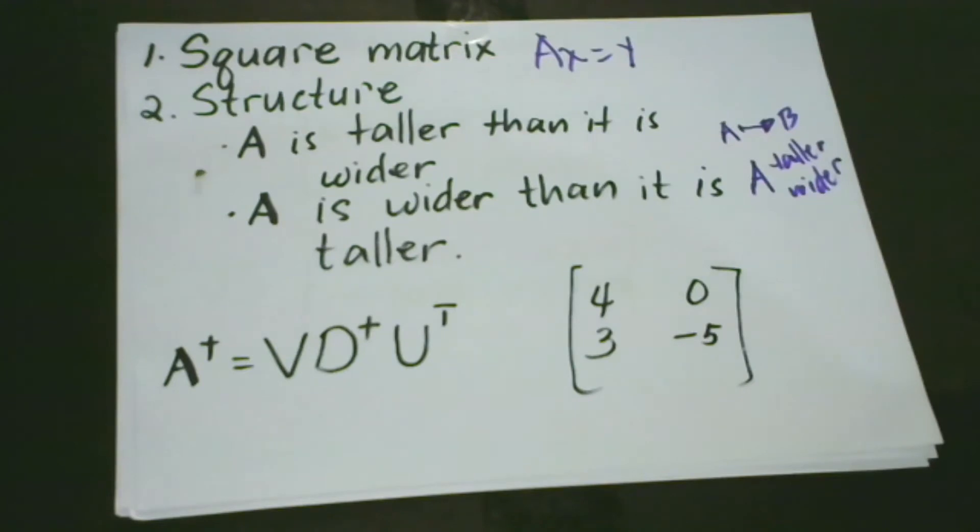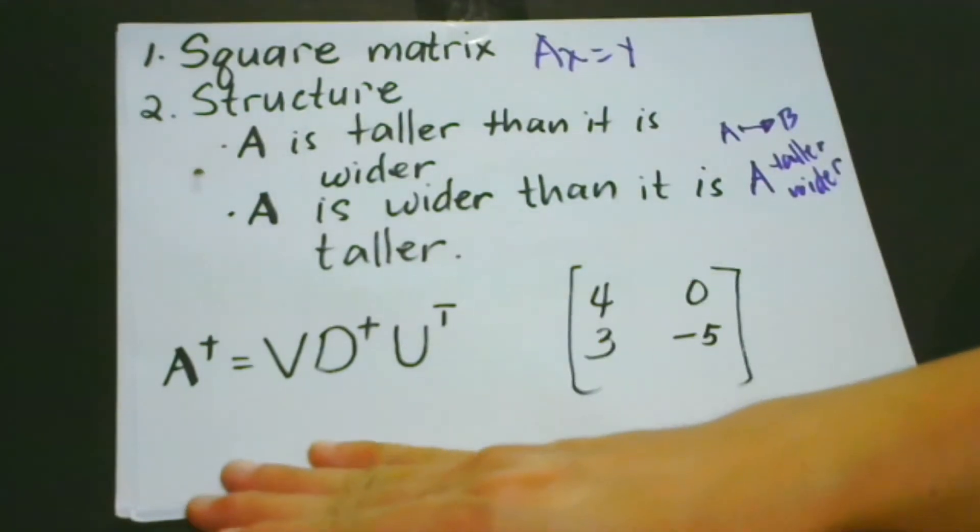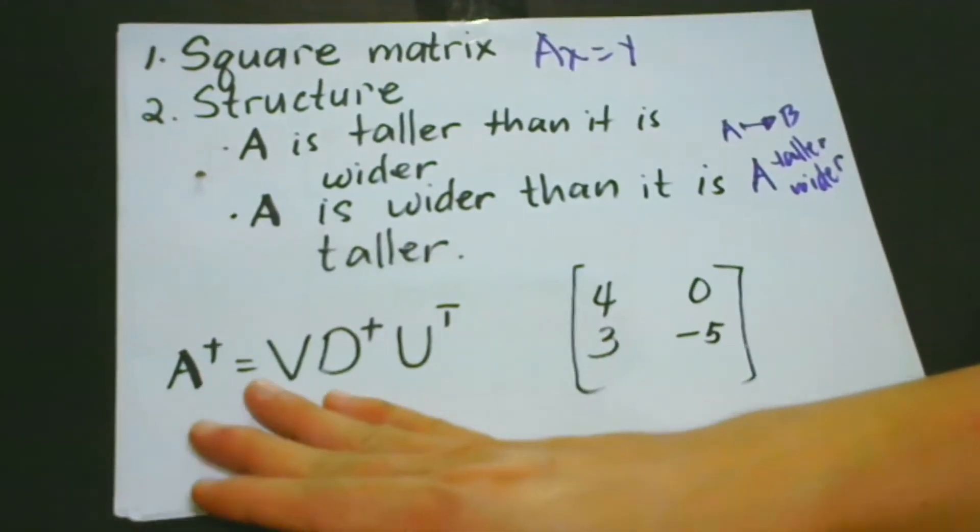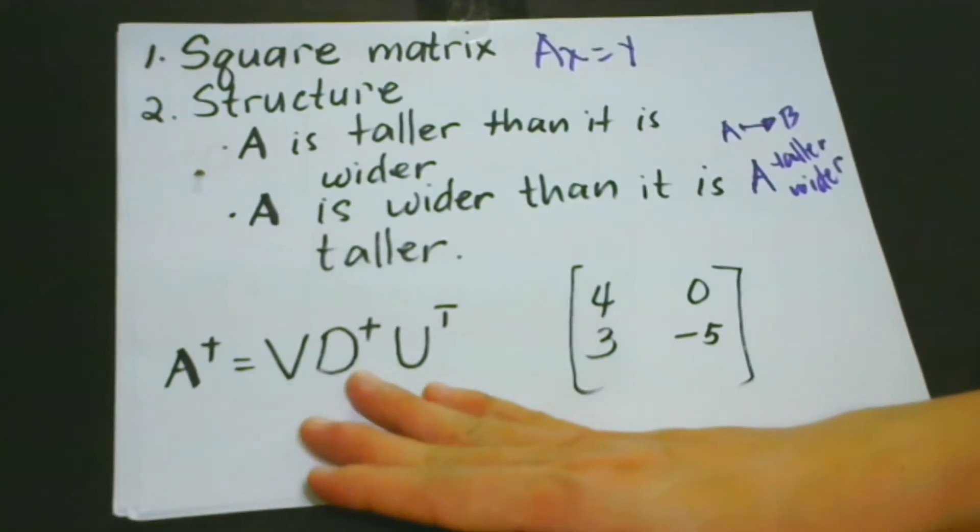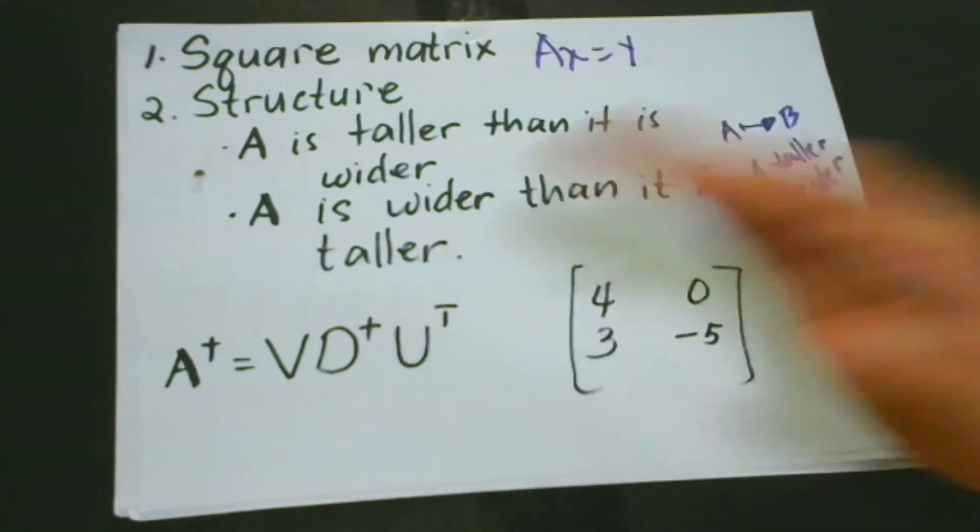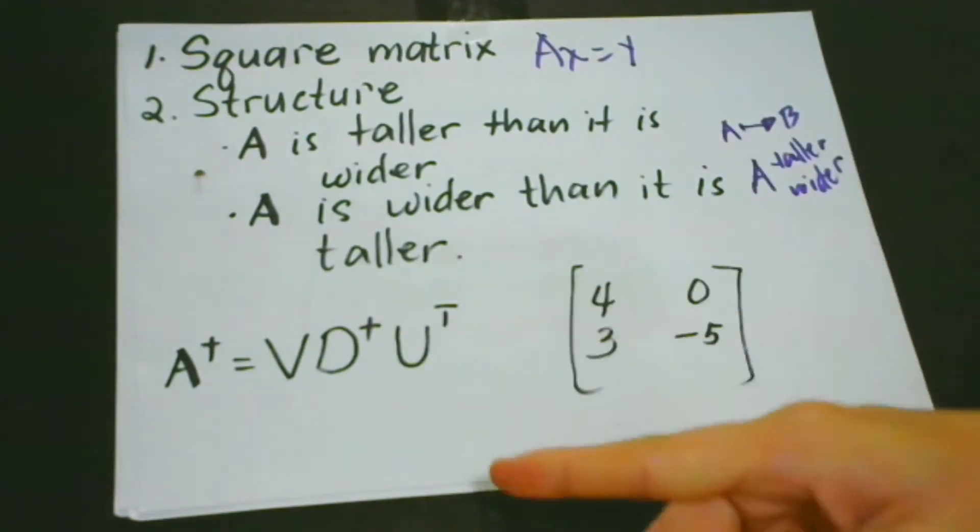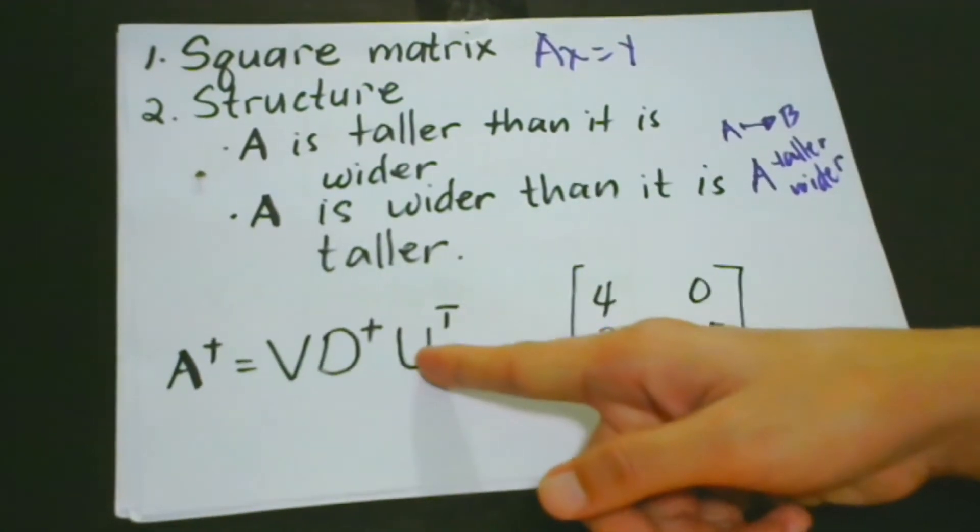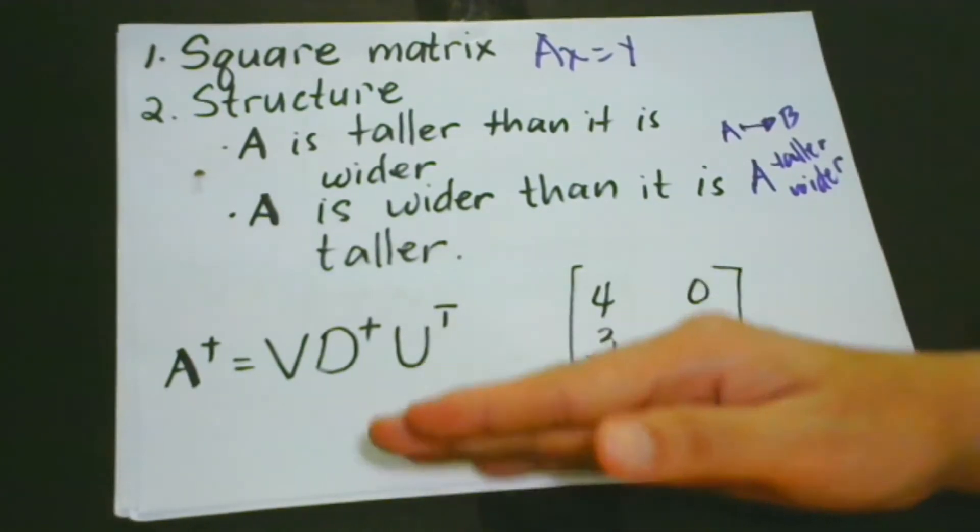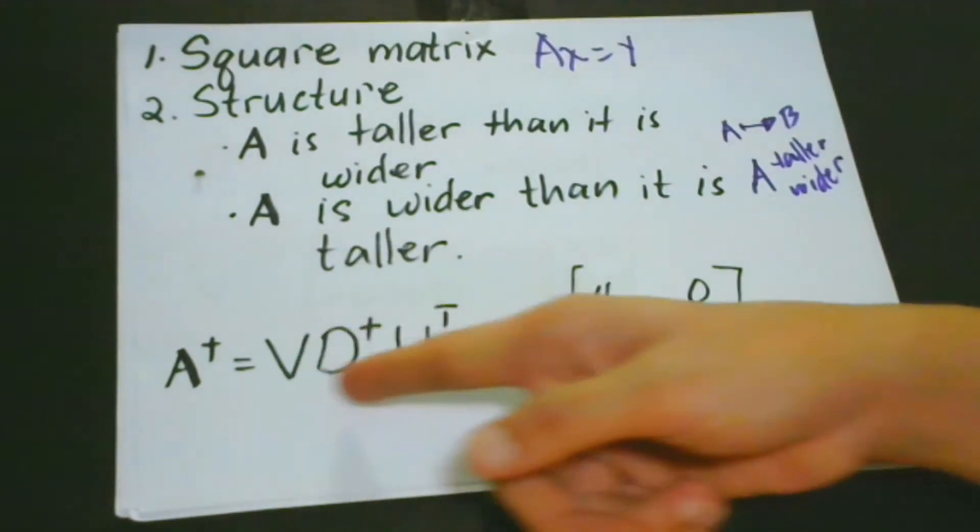So to practically compute, we have to follow this formula. This is our guiding formula. We have the pseudo-inverse of A is equal to V, D inverse, or the inverse of D, transpose U, or U transpose. So we have here one, two, three elements that we have to study first before we move on.